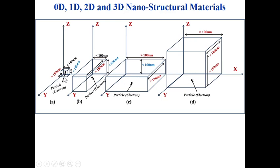In summary: 0D — the electron or particle is trapped and confined in all three directions, grain size less than 100 nanometers in all directions; 1D — elongated along one direction (greater than 100 nanometers) but restricted in the other two; 2D — the charge particle can move freely along x and y but is restricted along z; 3D — the particle can move freely in any direction.